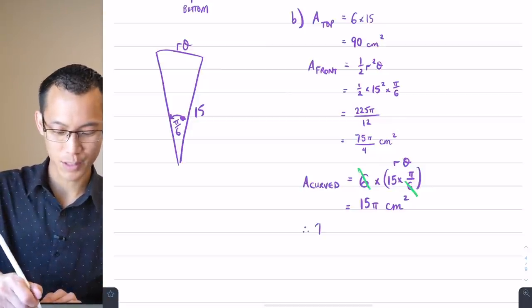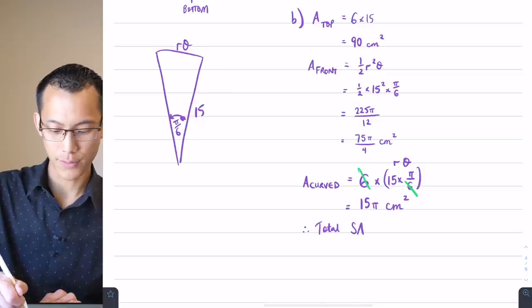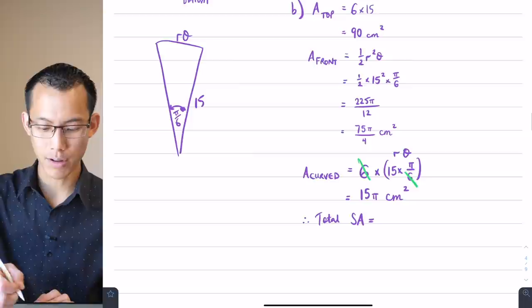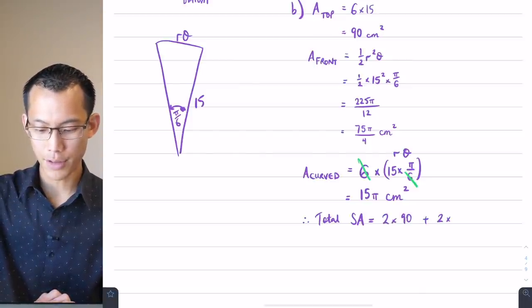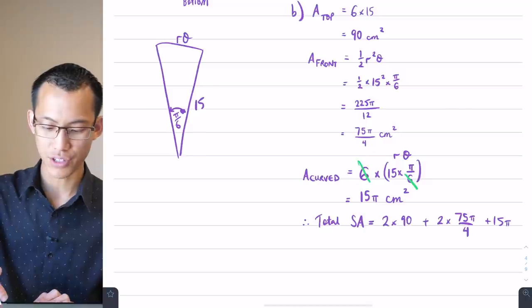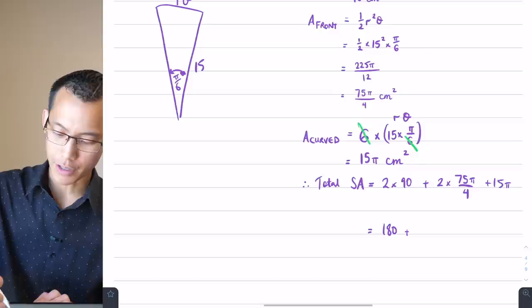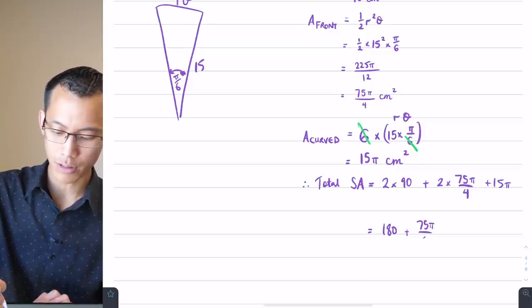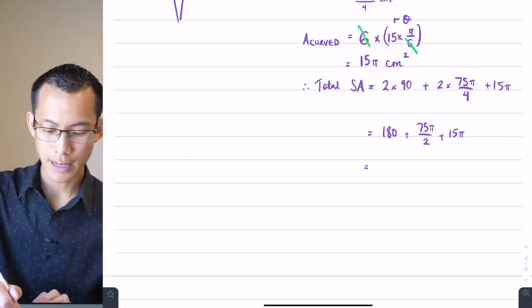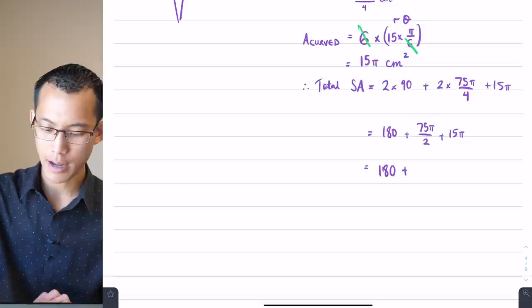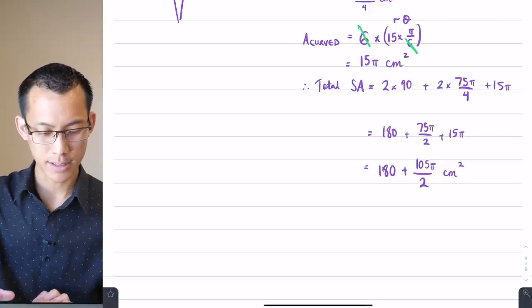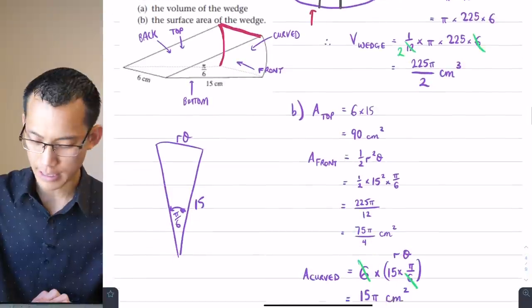We're ready to conclude. So I can say total surface area equals, remember, there's two lots of the top, top and bottom, two lots of the front, front and back. And then there's just one of the curves. So I'm going to get double of the 90, double of the 75π/4. And then I'm just going to have a single lot of the 15π. So let's just tidy that up a little bit. That's going to be 180. The two and the four are going to cancel a little bit, giving me 75π/2 plus 15π. That 15π is the same as 30π/2. So that gives me leaving the 180 separate from the other guy, 105π/2, if I'm crunching my numbers right on the fly, square centimeters. And let's just have a see. Did they want us to approximate? They did not. So I'm done.